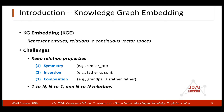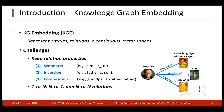There are also difficult cases like 1-to-n, n-to-1, and n-to-n relations that are very difficult to predict. Here we show an example with head entity Ang Lee, relation as 'director of,' and you can see the tail can be many of the movies that Ang Lee directed. So this is a 1-to-n case.